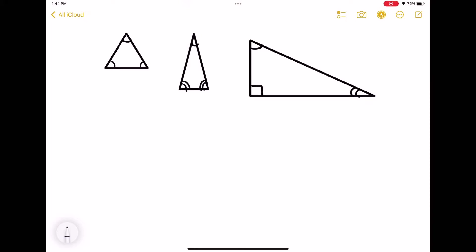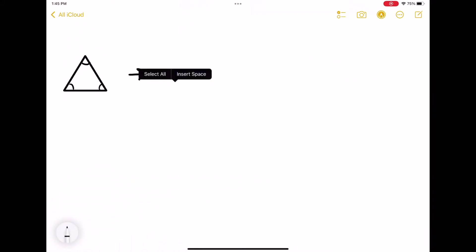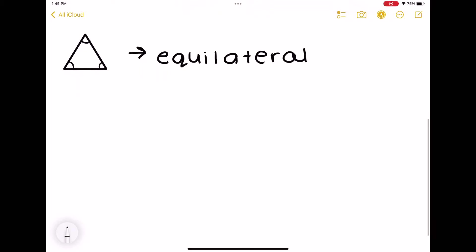So let's start with the first one that has all the same angles. Now, how do we classify this, and what do we consider as? So we consider this kind of triangle as an equilateral triangle, and this is because, as we can see from the word, the root equal, like the beginning, that is a root for equal, and all three of these sides are equal.